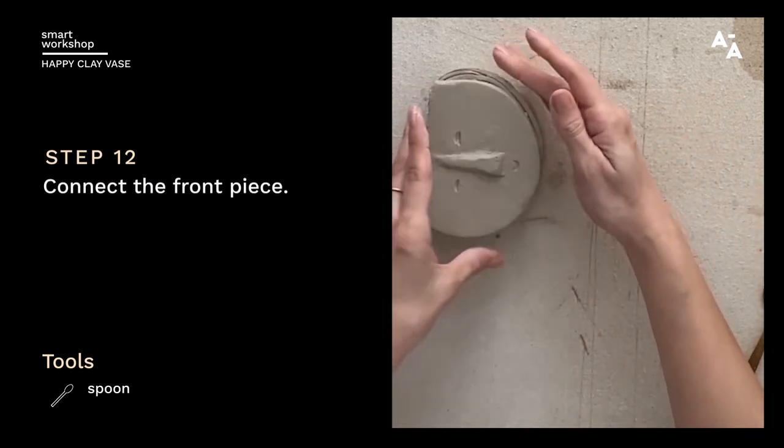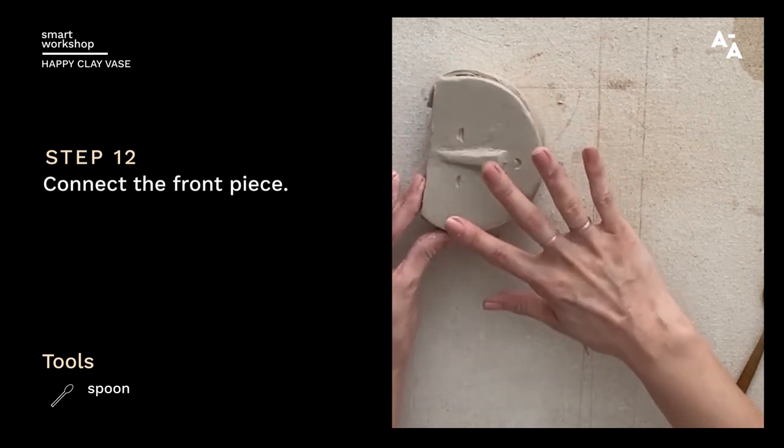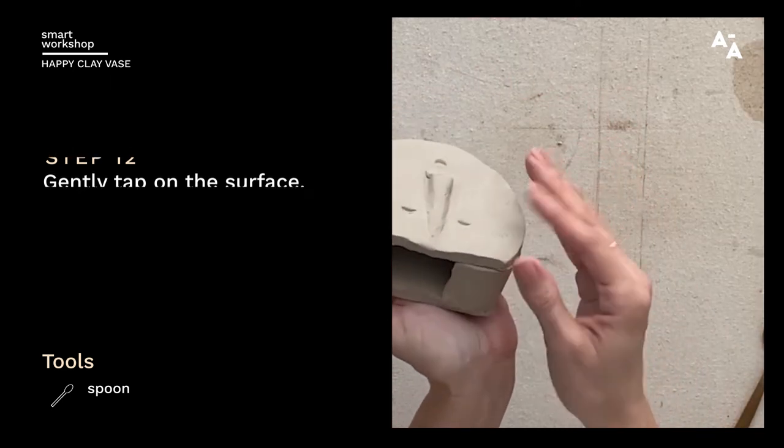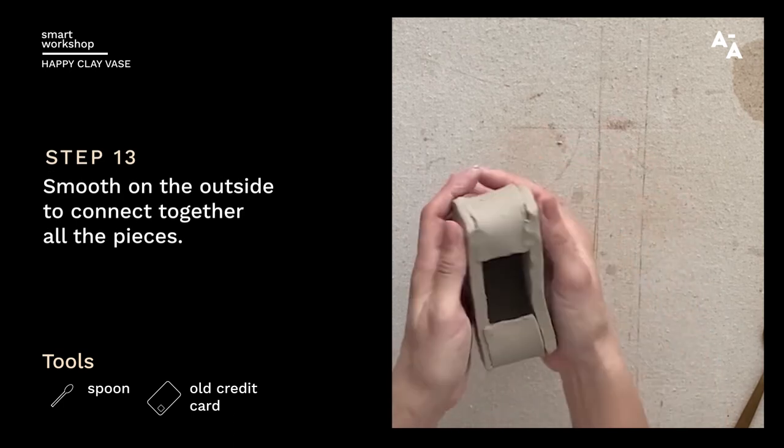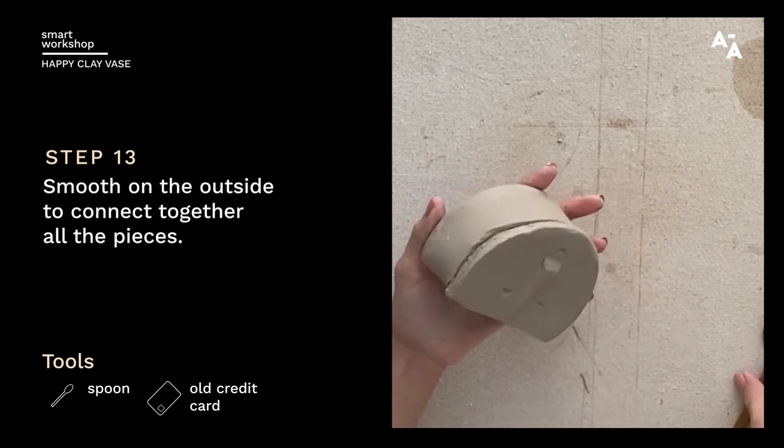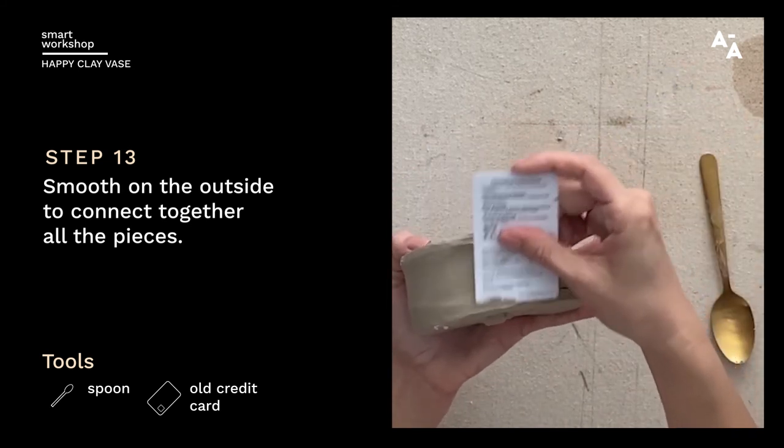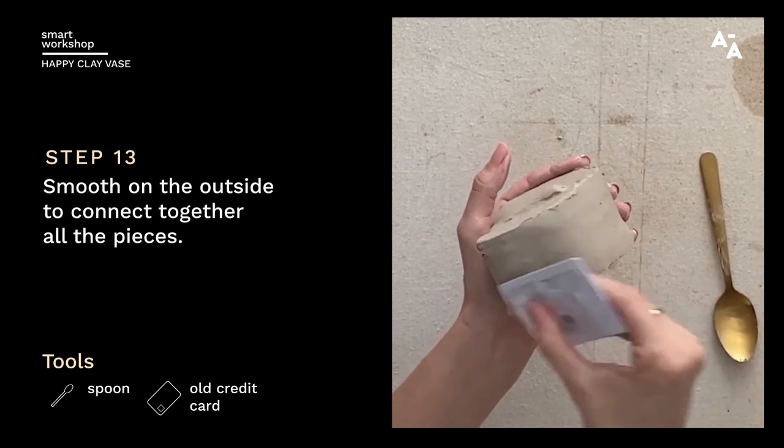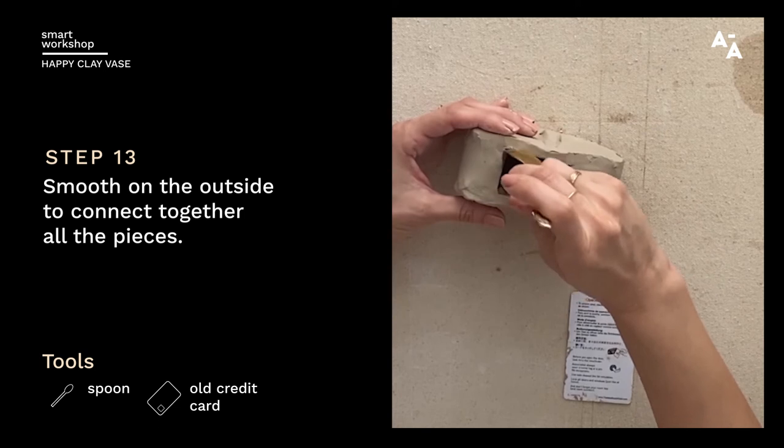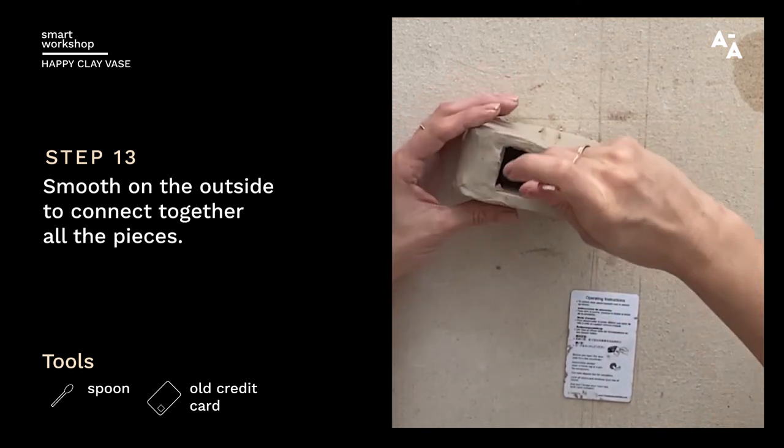And then I'll connect the two pieces and line this up. And now a little firm tap to connect these. And then again we'll smooth, but this time on the outside. So we're just going to connect all three pieces. Make sure everything's well attached and that the edges are as clean as you want them to be.